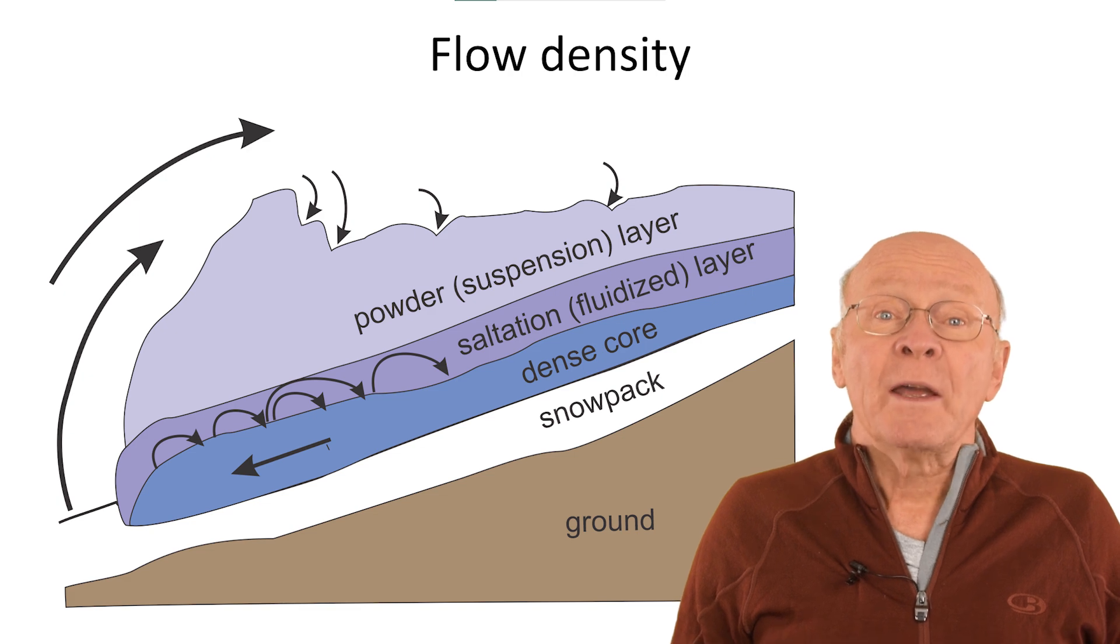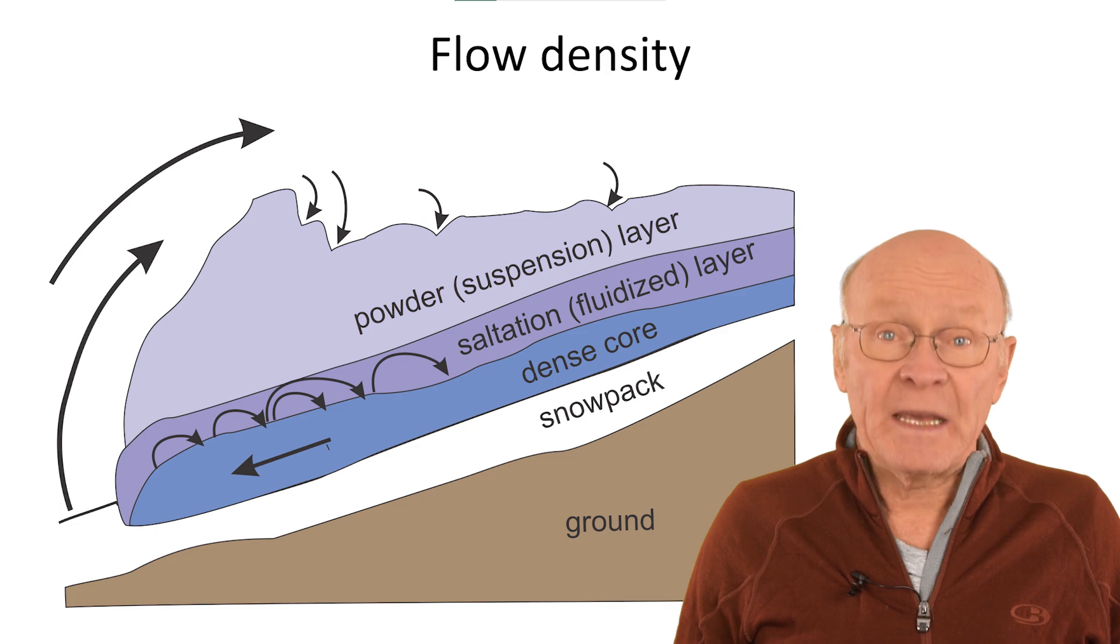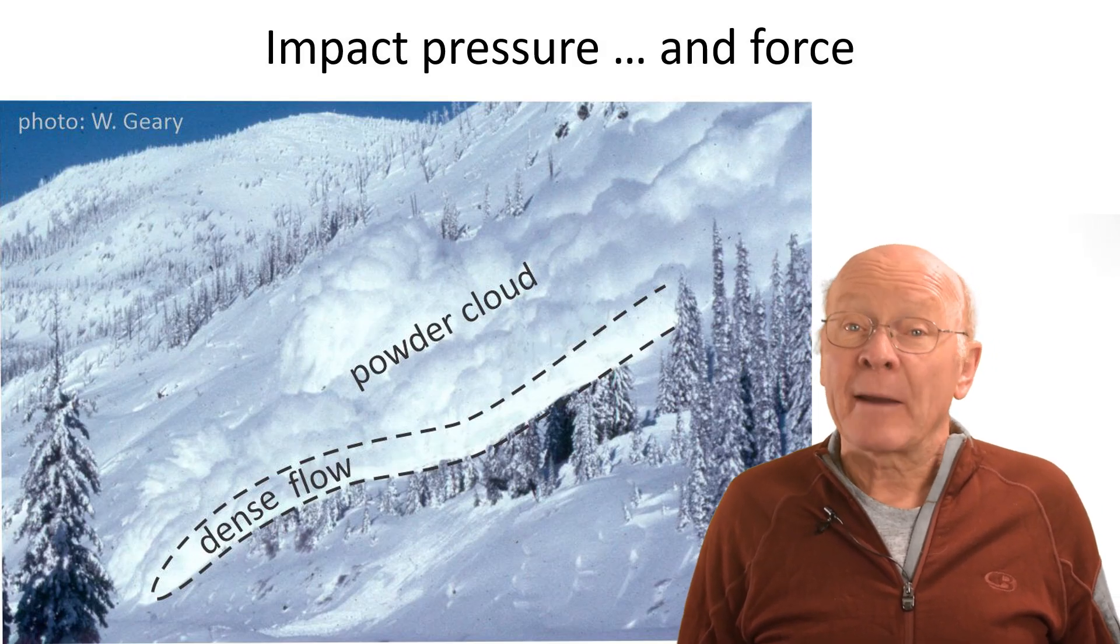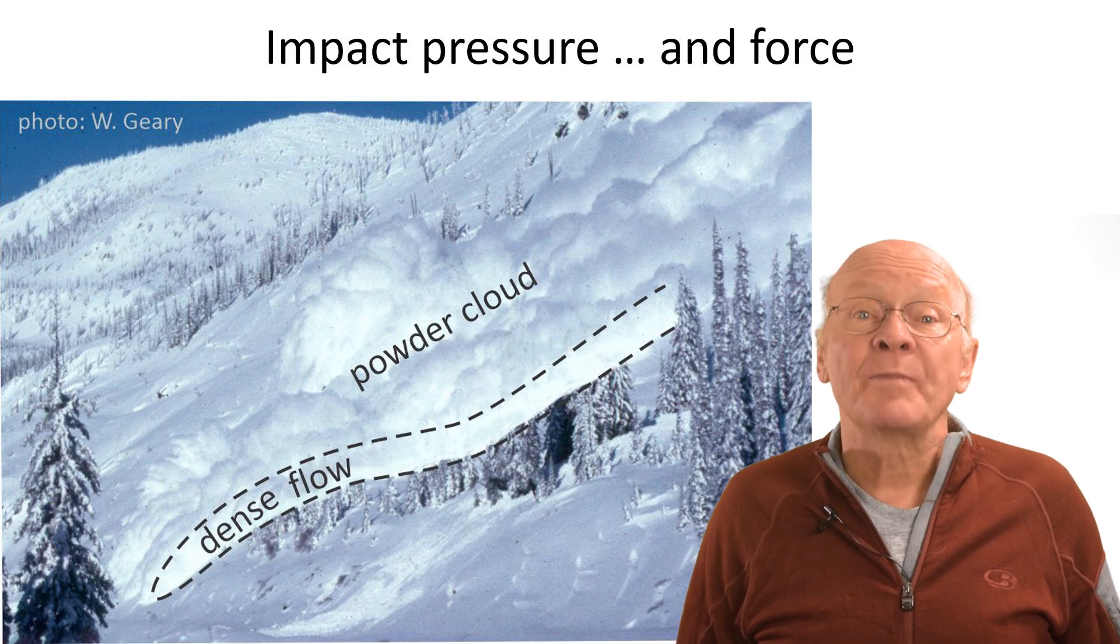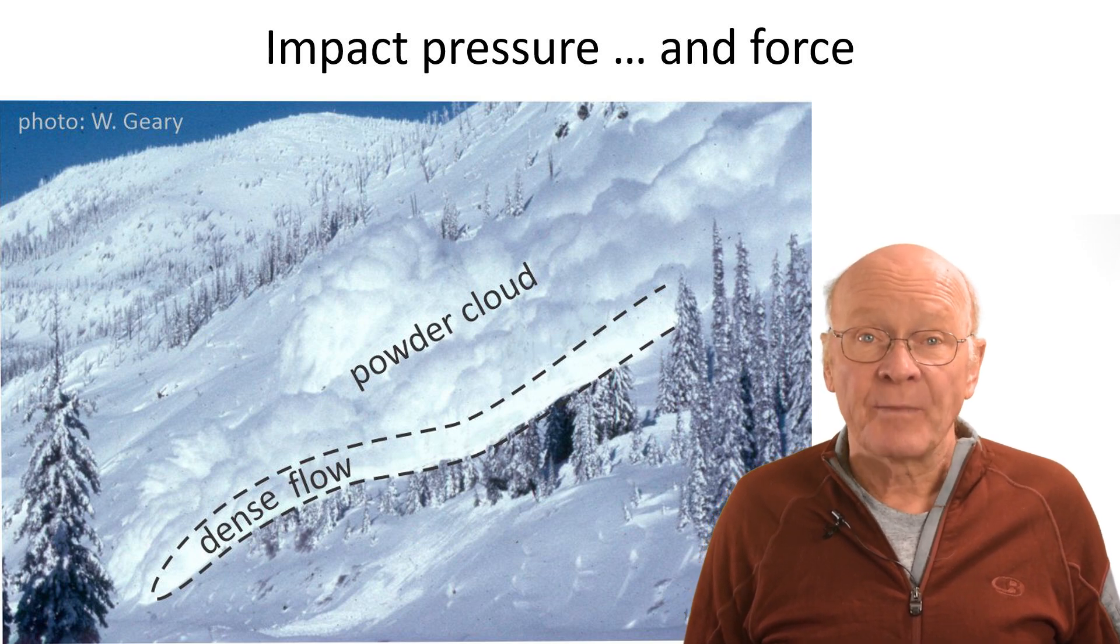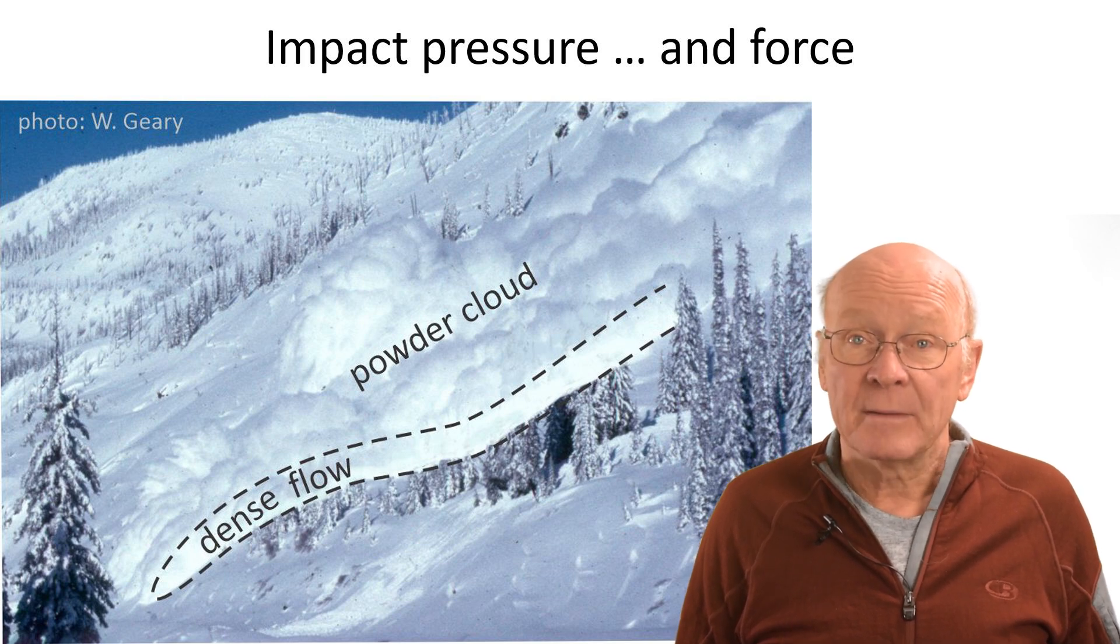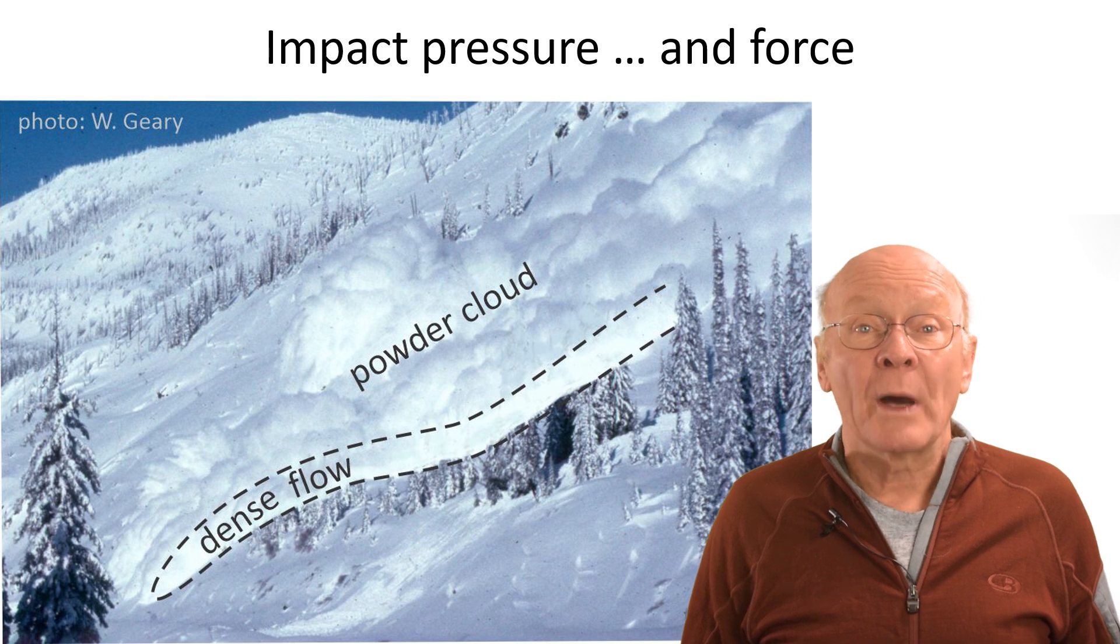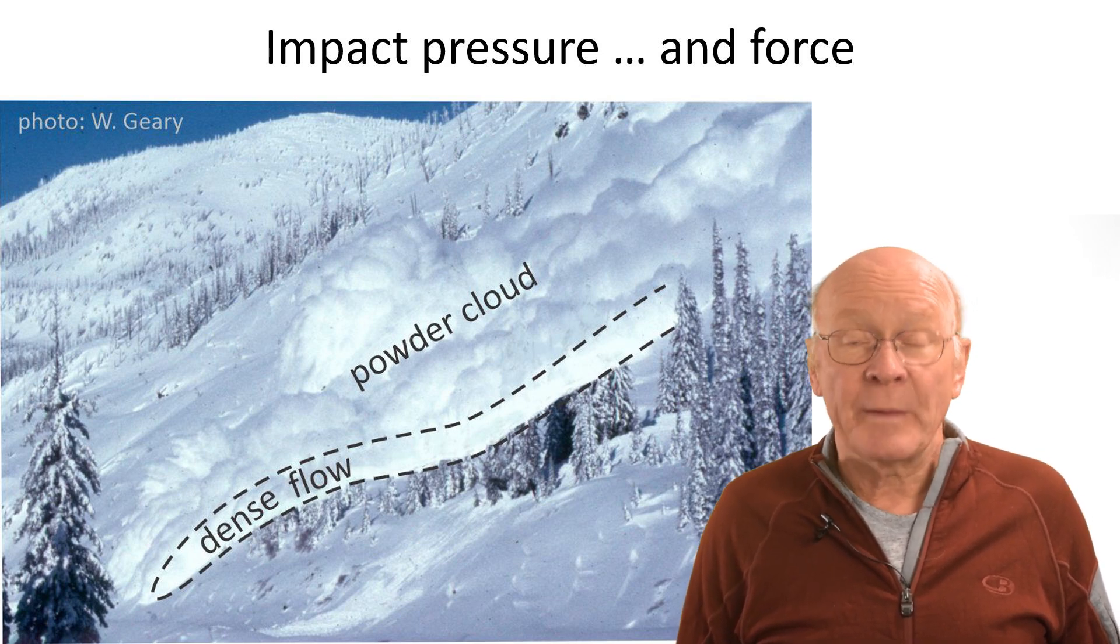However, the greater height of the powder layer means its impact force on tall objects can be substantial. Impact pressure is the impact force divided by the area that is impacted. In unconfined terrain, the dense flow is often only one or two meters high, whereas the powder layer can be 30 or more meters high.